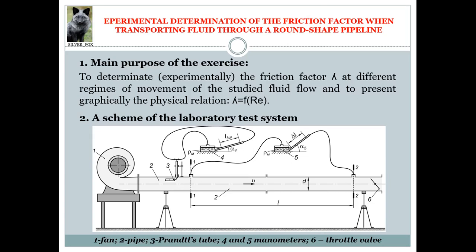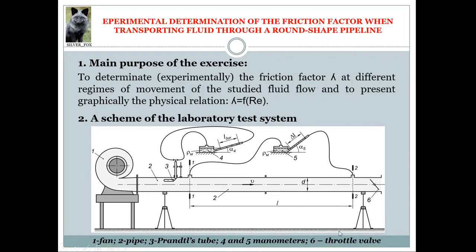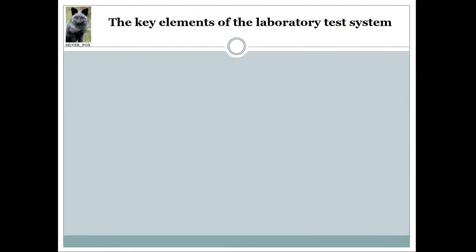We are going to measure the friction energy loss presented in the form of pressure. Then, based on the well-known Darcy-Weisbach formula, we will derive an equation for calculating the friction factor. Finally, position 6 indicates the throttle valve installed at the end of the pipe, which is used to regulate the system flow rate.